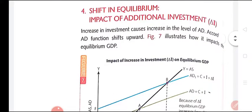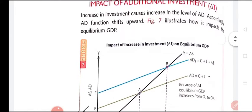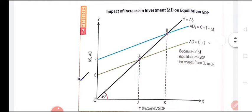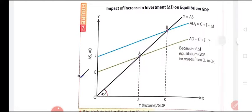First, let's understand the impact of additional investment through the graph shown on your screens. Taking income on the x-axis and aggregate demand/aggregate supply on the y-axis, we have drawn a 45-degree line. At every point of this 45-degree line, income is equal to aggregate supply, so we assume this line to be the line of aggregate supply.